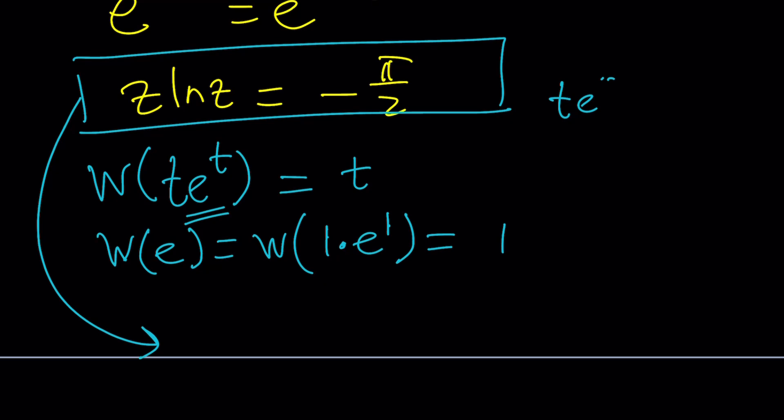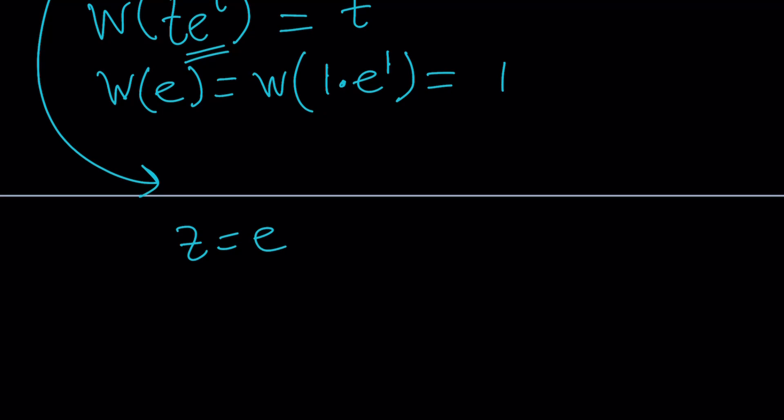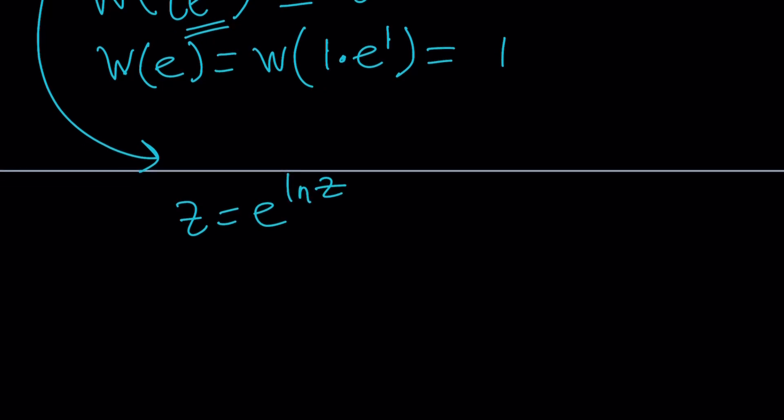Let's go ahead and write the z as e to the ln z and that does the trick right. So now we have the following: ln z times z which is e to the power ln z equals e to the power negative pi over 2. Don't divide by e to the ln z, that's not going to help you, you're going to be in big trouble.